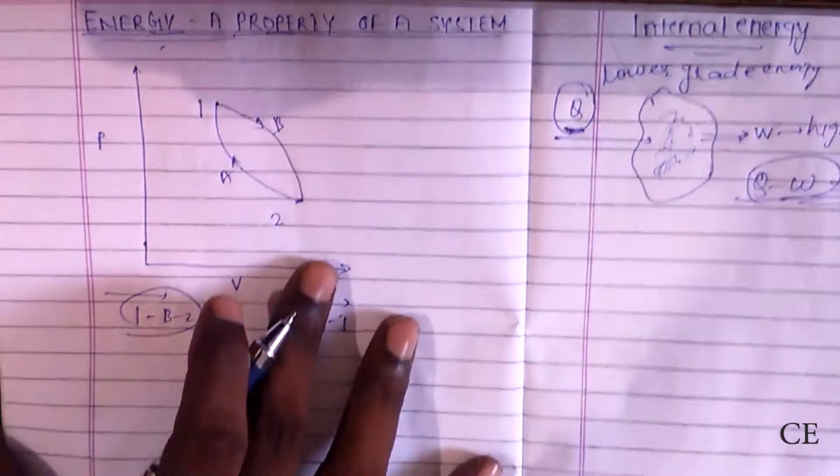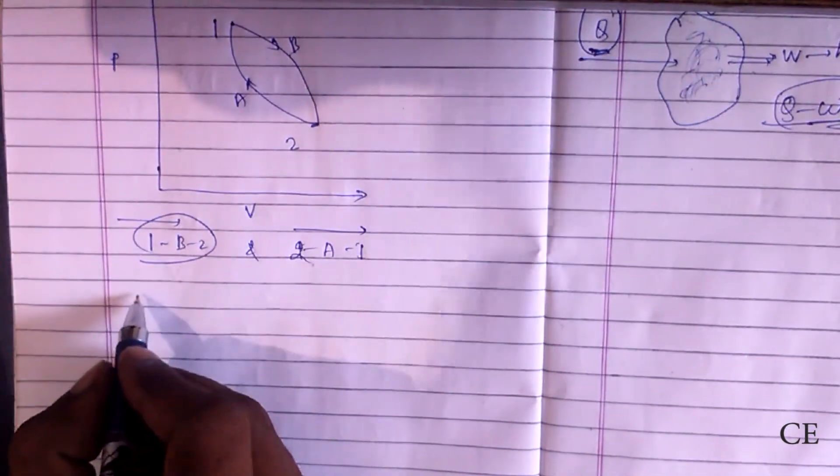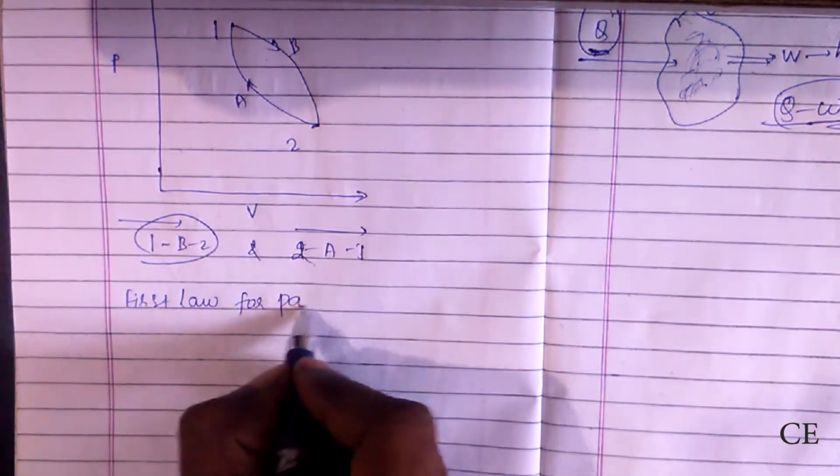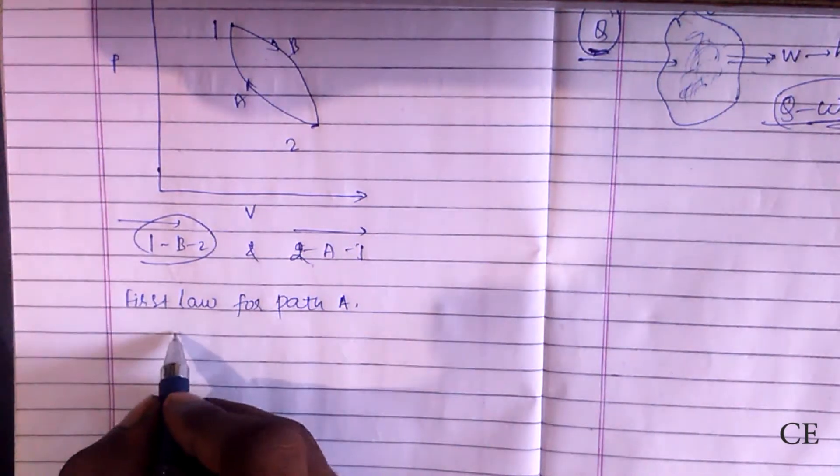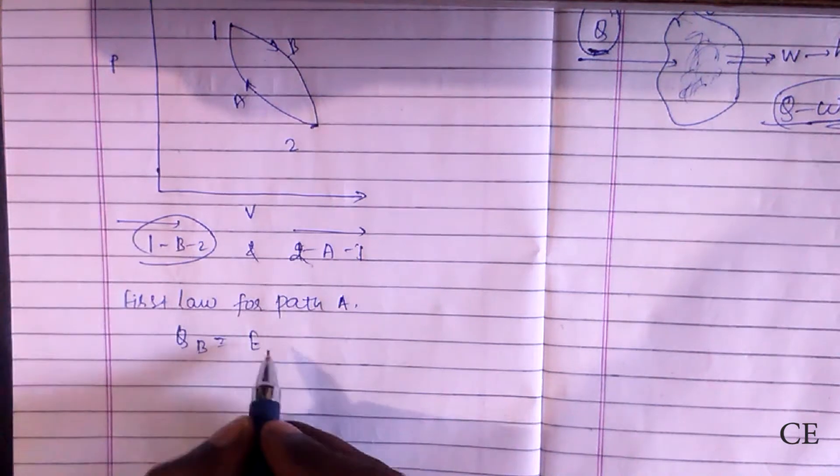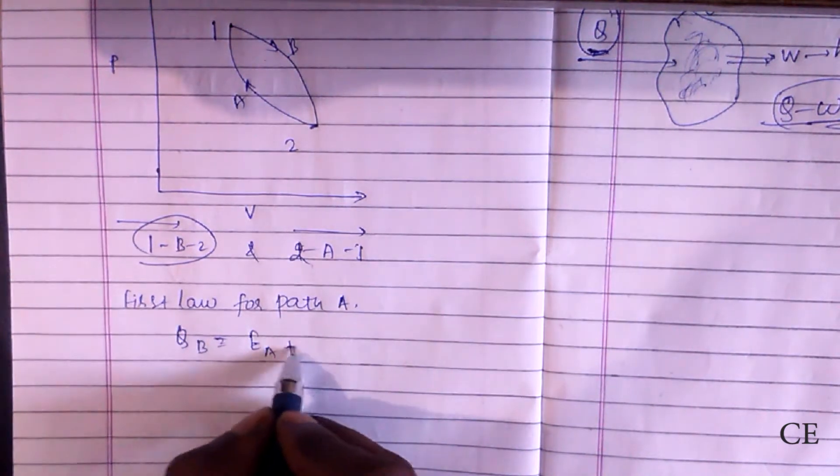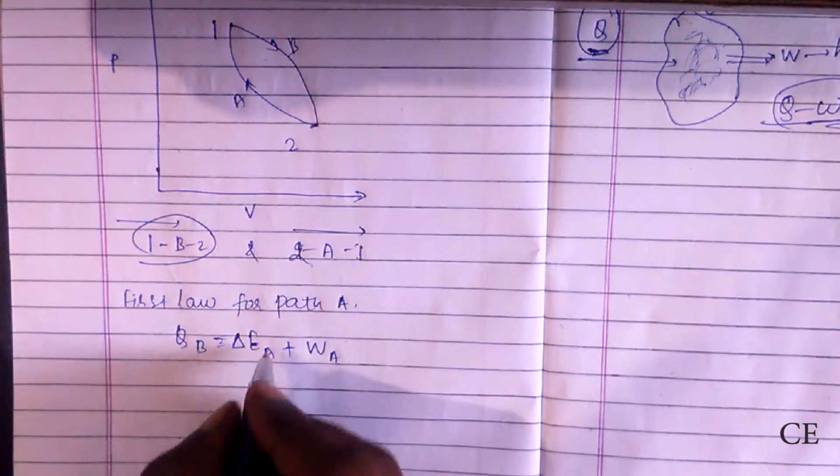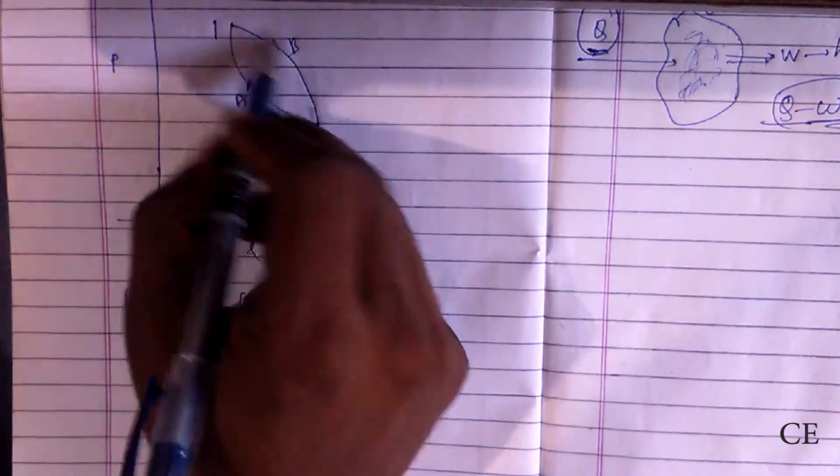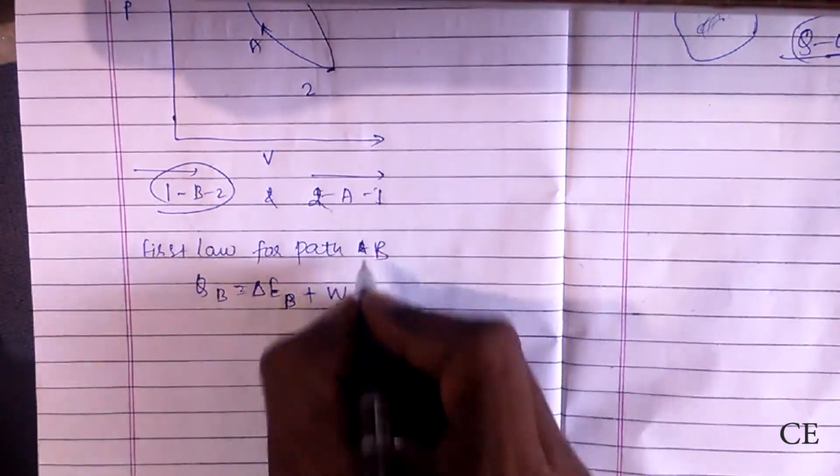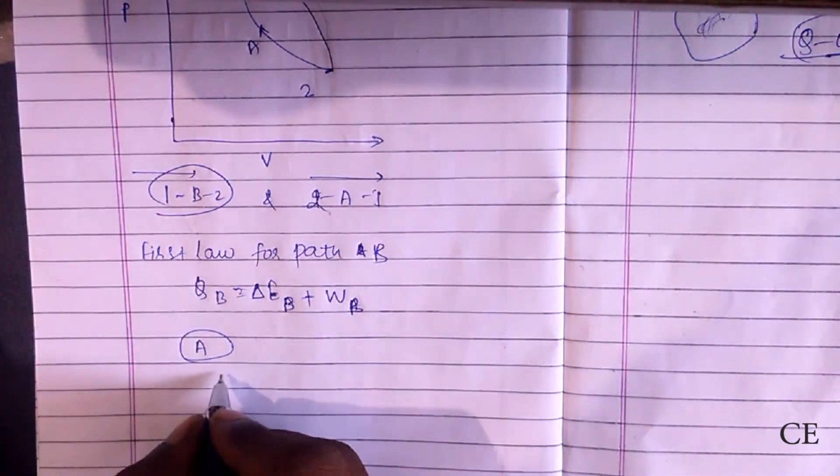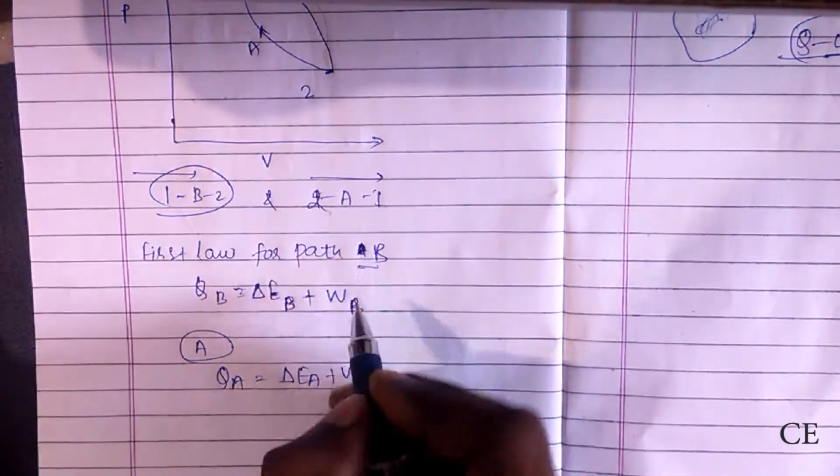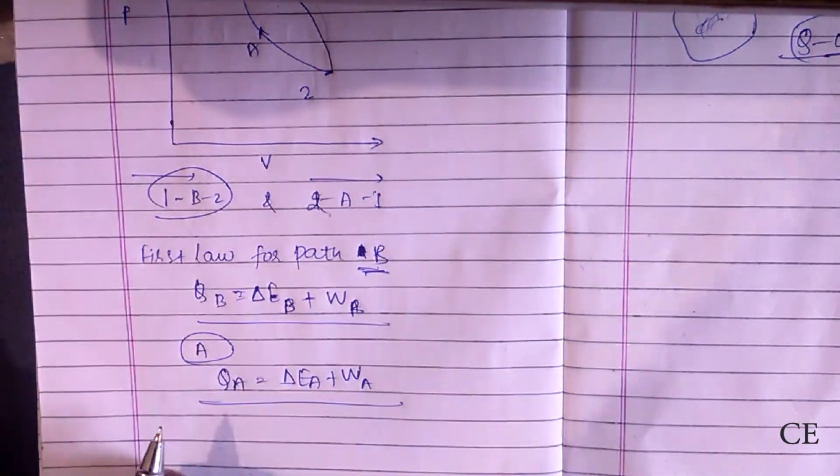Let us write the equation for path A. First law for path A would be Q_A equal to E_A plus W_A. For path B it would be Q_B and this will be for the whole process.